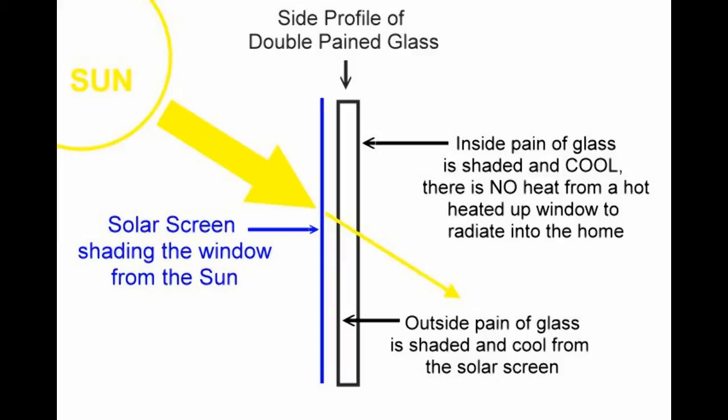Therefore it's going to eliminate A, the sun from getting into the home, and B, the hot heated-up glass from the heat from that getting into your home.